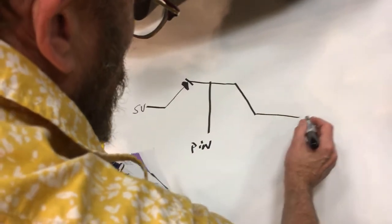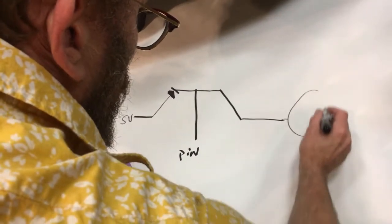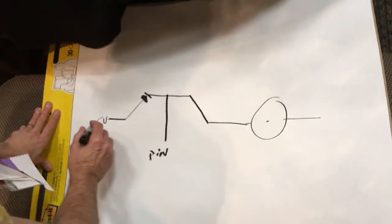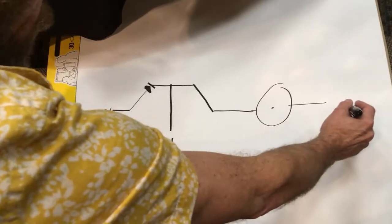And this goes to, let's say, a motor right here. We're going to call that the motor. So now I can take a pin and I can switch 5 volts through the motor.